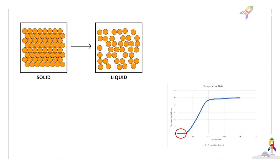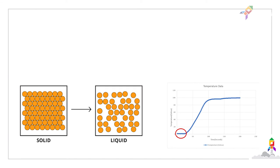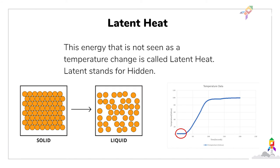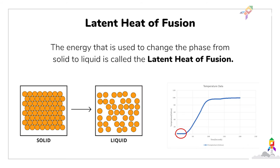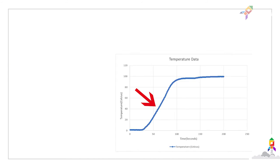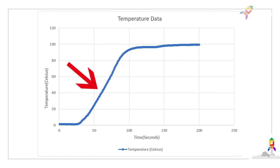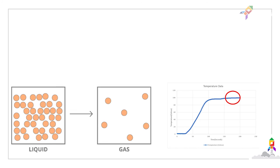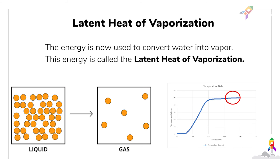When the temperature reaches 0 degrees, the attractive forces that keep the molecules together become very weak and the molecules start moving away from one another until the ice completely transforms into liquid water. This energy that is not seen as a temperature change is called latent heat — latent stands for hidden. The energy used to change the phase from solid to liquid is called latent heat of fusion. Once the ice is completely turned into water, the temperature again starts to increase. At 100 degrees, the temperature again becomes constant because the energy is now used to convert water into vapor. This energy is called latent heat of vaporization.